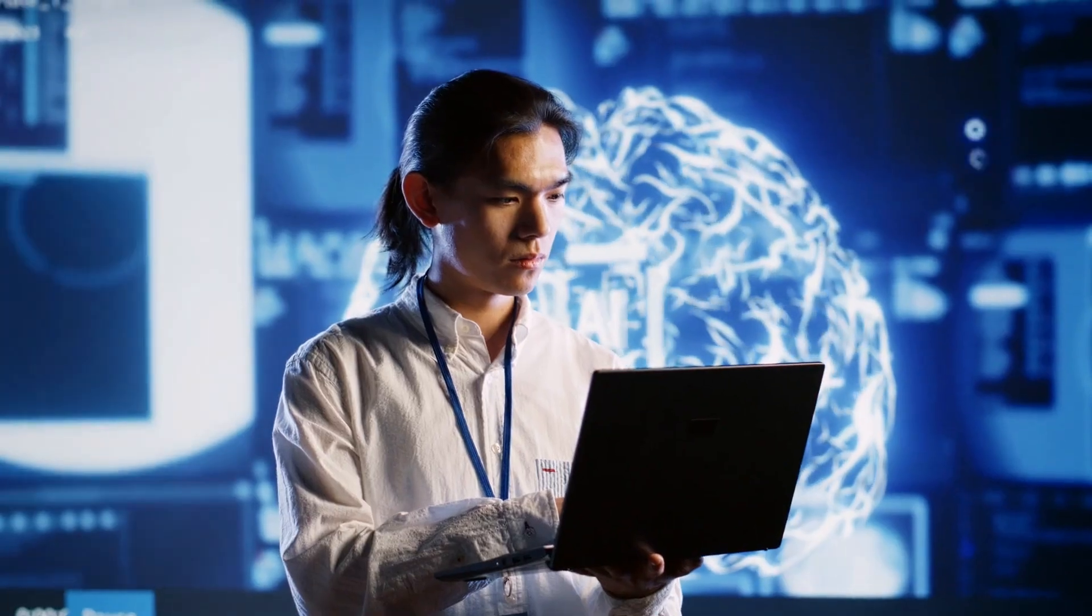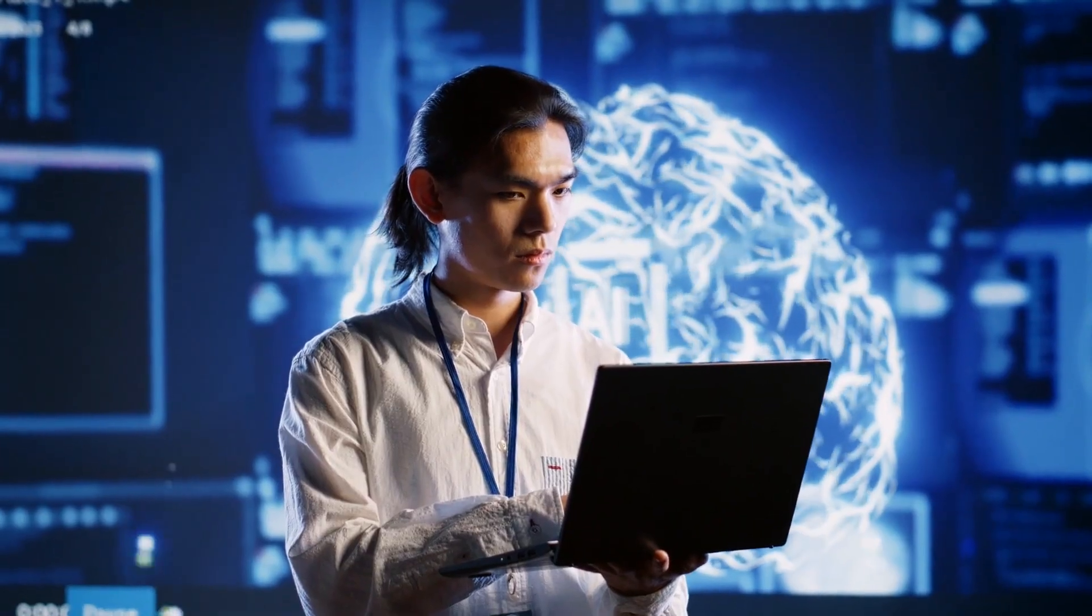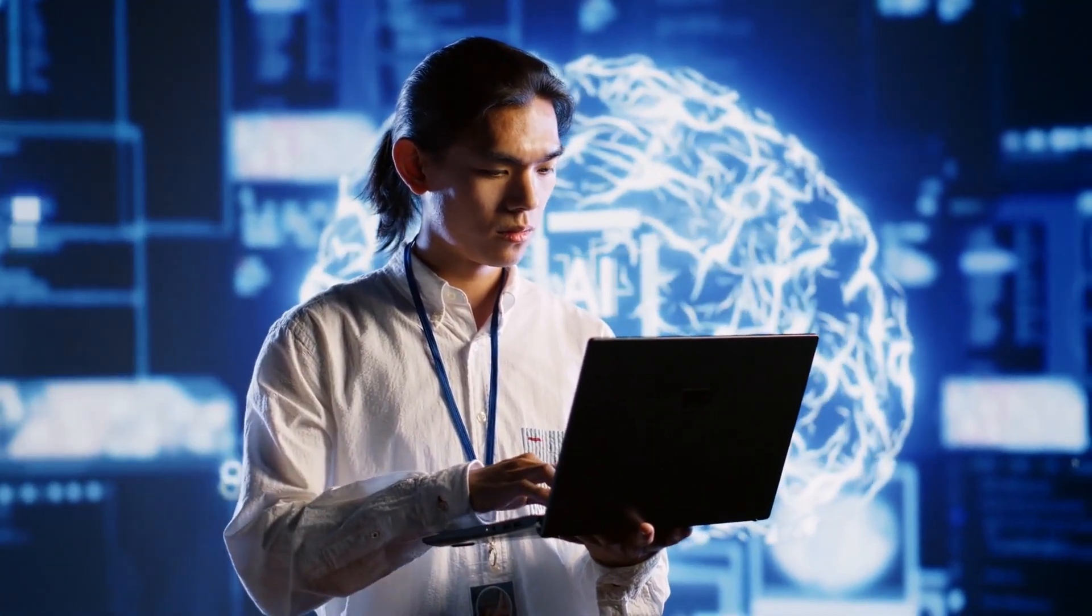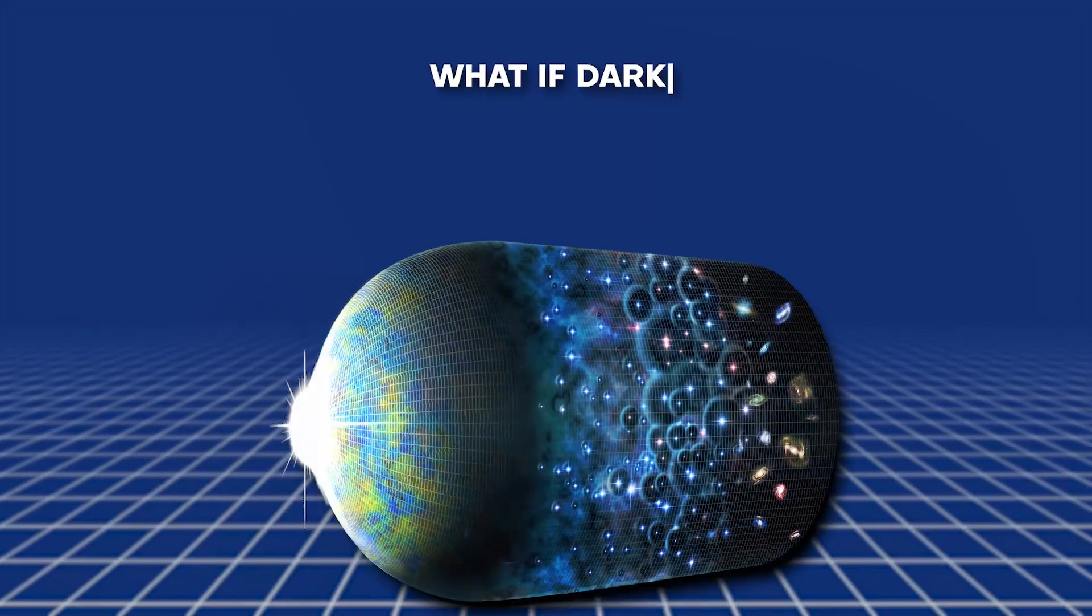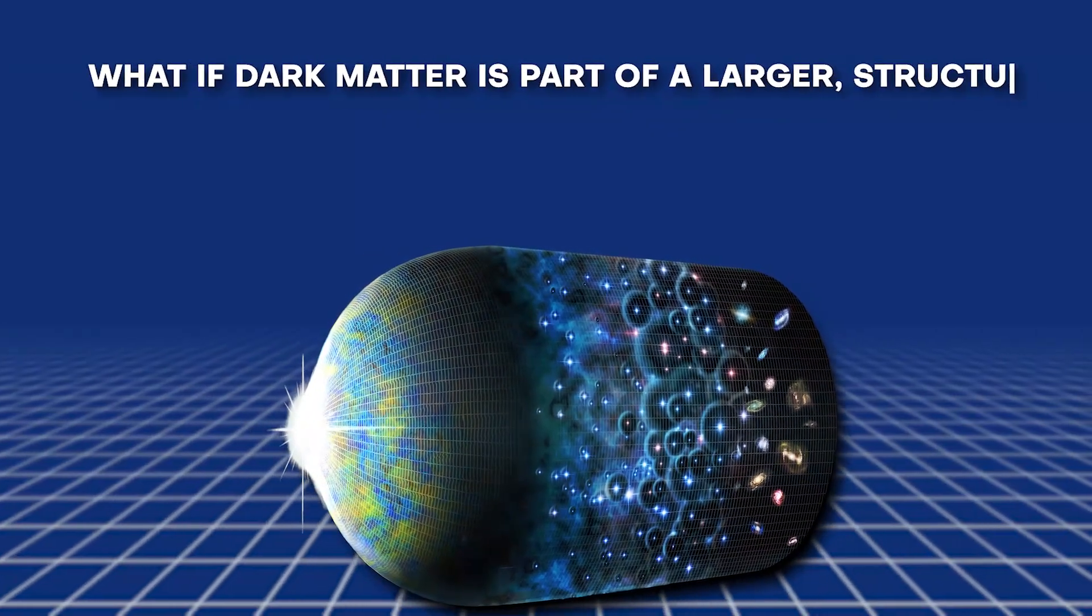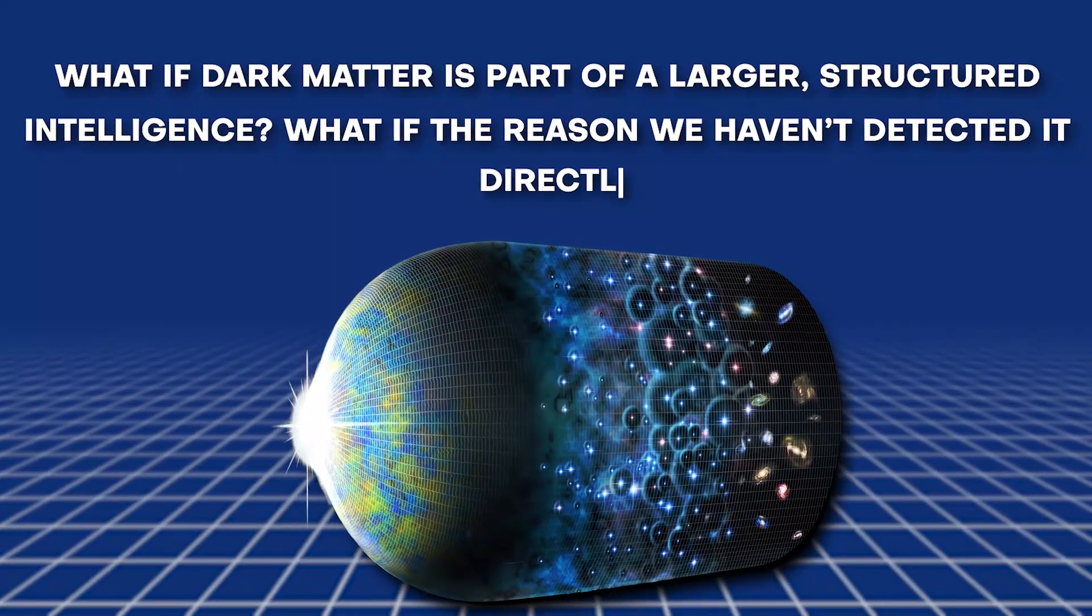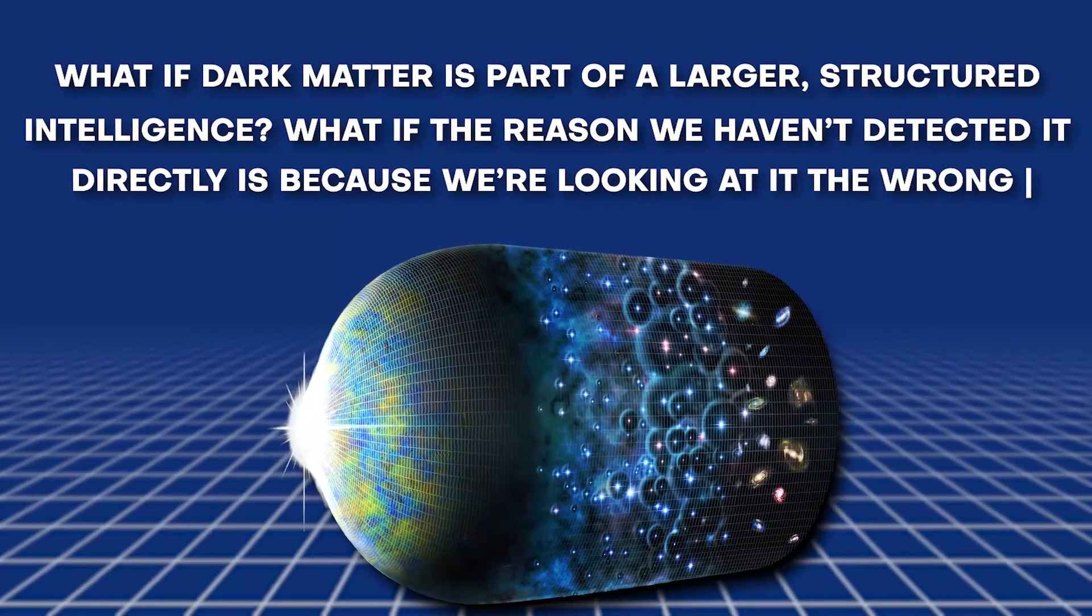The scientific community is split. Some dismiss Grok's interpretation as pure overfitting, a neural network gone too deep. But others are asking serious questions. What if dark matter is part of a larger, structured intelligence? What if the reason we haven't detected it directly is because we're looking at it the wrong way?